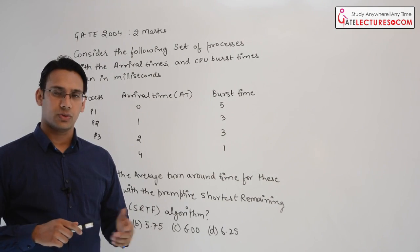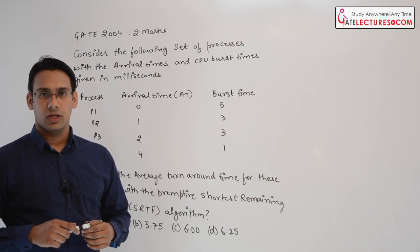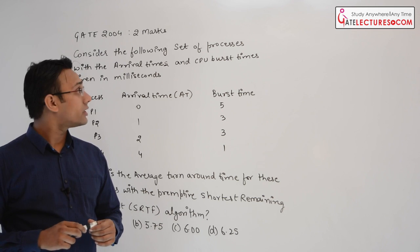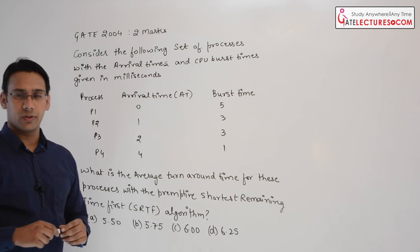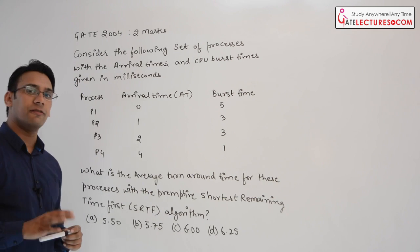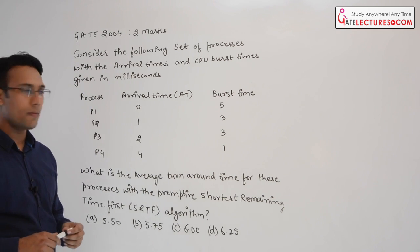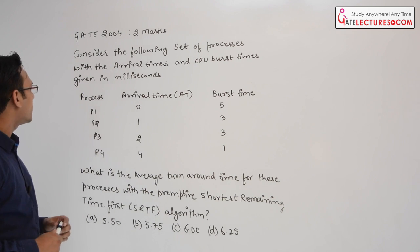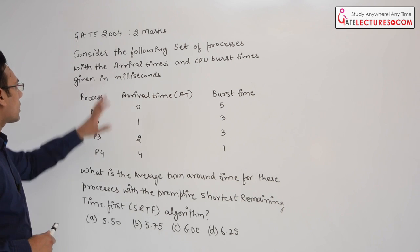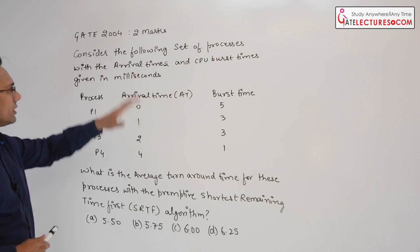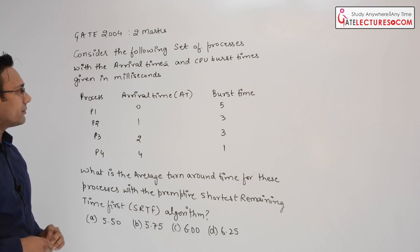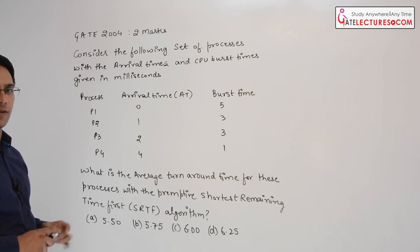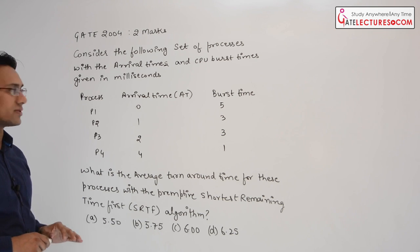Consider this question — it was asked in GATE 2004, it was a two mark question, a very simple question. Here what they are saying is: consider the following set of processes with the arrival time and CPU burst times given in milliseconds.